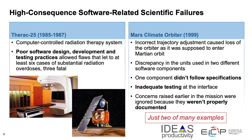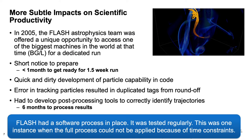These are just two of many examples. There have been other impacts on scientific productivity. For example, in 2005, the Flash Astrophysics team was given the opportunity to have a long, dedicated run on the largest machine in the world at the time, the Blue Gene/L. They were given very short notice to prepare for this run, so they did a quick and dirty development of the particle tracking capability and ended up with errors in tracking the particles. This was a result of duplicate tags from roundoff, a floating point error. After the run was made, they had to develop post-processing tools to correct the mistakes. This took six months.